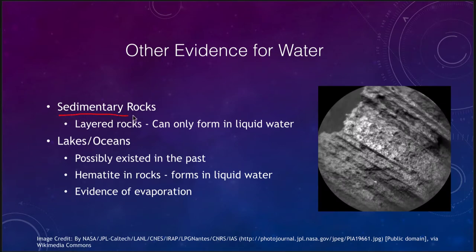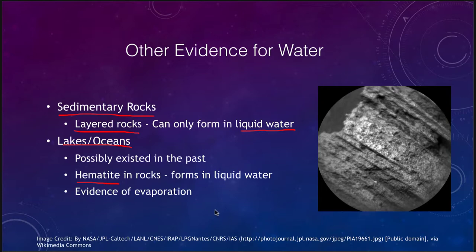Other evidence for water would be sedimentary rocks, which occur on Earth from water flows — they are layered rocks that require liquid water. We didn't see any when we talked about the Moon, Mercury, or Venus, but we do have some here on Mars. It is the only place other than Earth where we have found sedimentary rocks. We have also seen evidence of lakes and oceans that possibly existed in the past, hematite in rocks which forms only in liquid water, and evidence of evaporation. Putting all these together, we can say with very good confidence that liquid water did flow on Mars in the past, which leads us to the idea that there could have been life at some point.